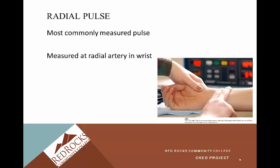The radial pulse is what we will be using to find the pulse for your pulse skill on test day. It's the most commonly measured pulse — you've probably measured your own. It's measured at the radial artery in the wrist, on the thumb side of the person's wrist. We'll go into detail and practice this in class.